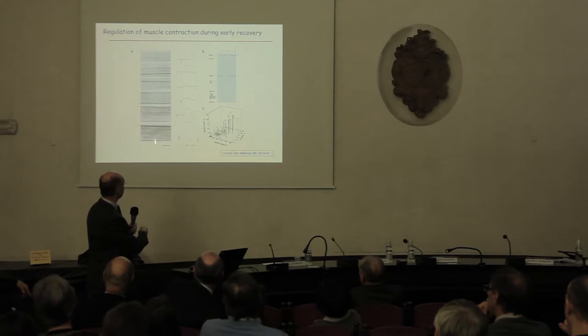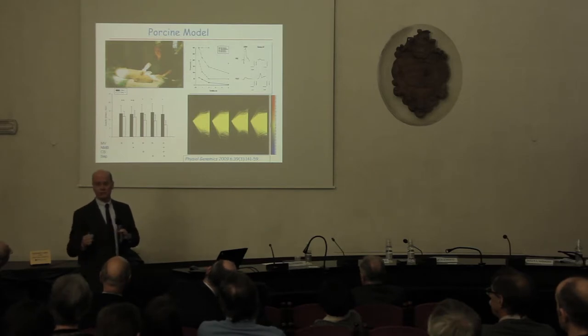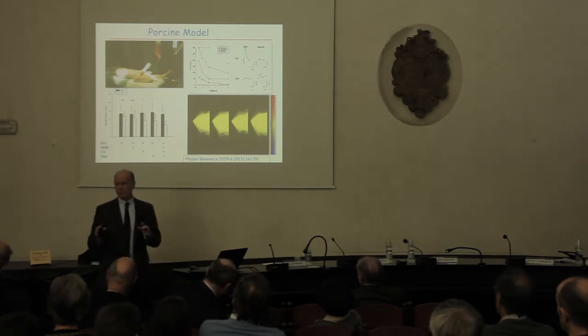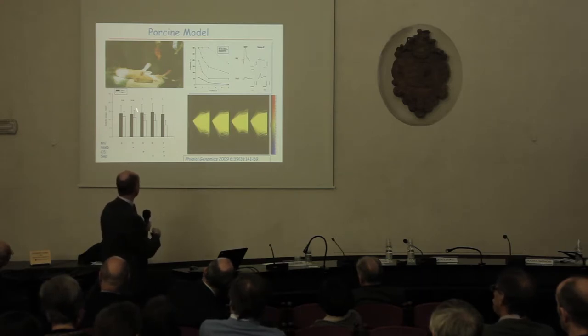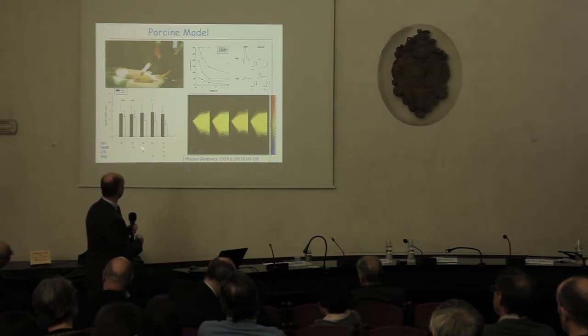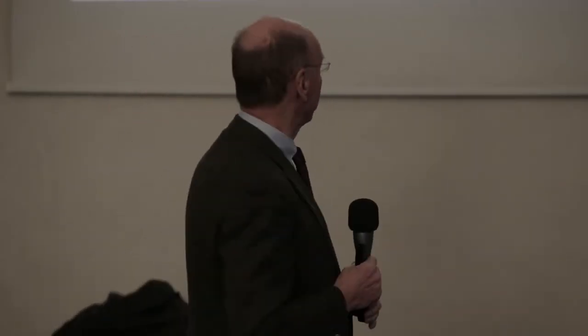ICU patients are not a homogeneous population, so we moved into an experimental animal model to understand this better. We started with the pig model, exposing animals to what we thought were the triggering factors: neuromuscular blockers, corticosteroids, and sepsis — alone or combined. These experiments were only five days long, which is too short to induce the full phenotype of critical illness myopathy. We don't see muscle atrophy in pigs exposed to neuromuscular blockers and mechanical ventilation, and no change in specific force. But when we add corticosteroids and sepsis, force-generating capacity is compromised.